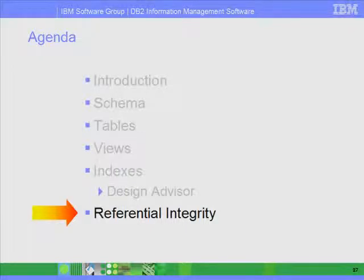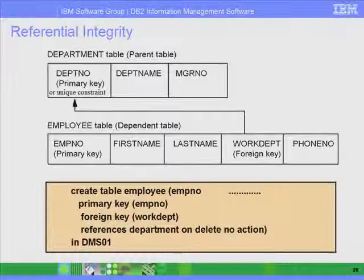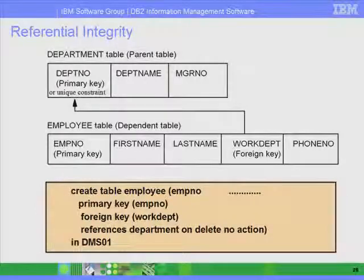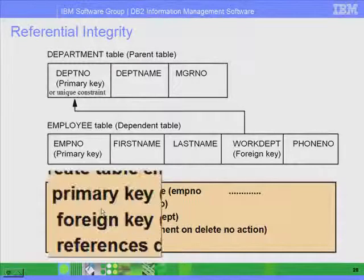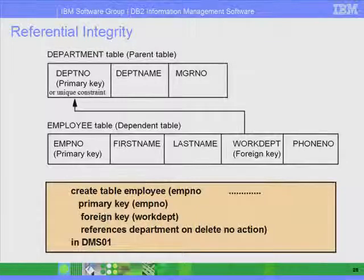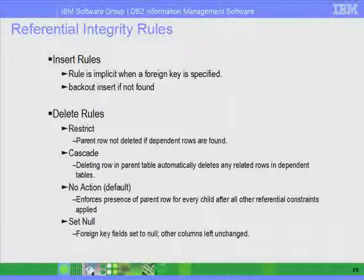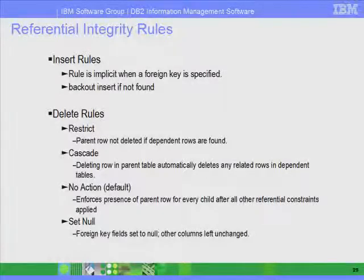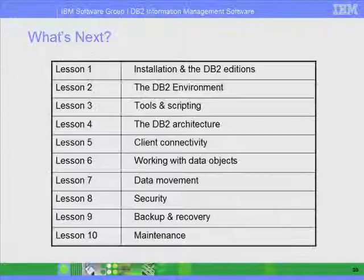Finally, we'll cover the last section of this presentation: referential integrity. Referential integrity means establishing relationships between different tables. For example, you want to establish a relationship between the department table — a parent table — and the employee table, which is a dependent or child table. You can do this using primary keys and foreign keys. There are also insert and delete rules that define what happens on the parent table when you delete or insert something on the child table.